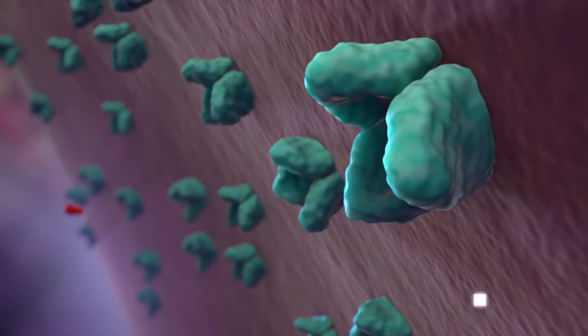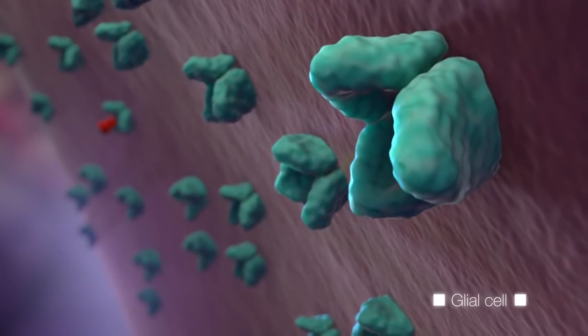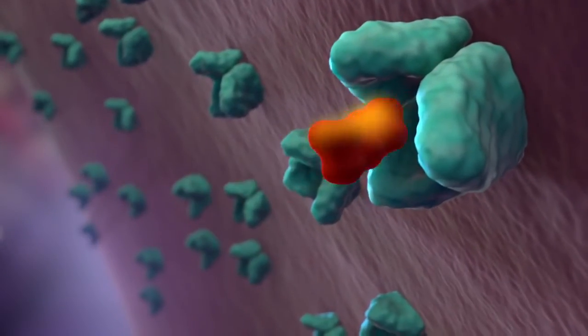Trigrileazole increases the expression and function of EAATs on glial cells, which facilitates the clearance of glutamate.